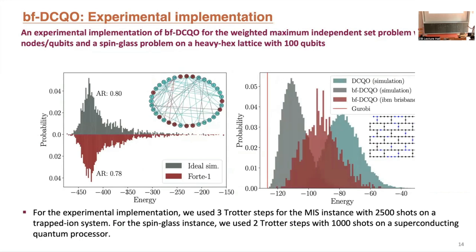To wrap up: we implemented this on a 36-qubit IonQ hardware for the Maximum Weighted Independent Set problem. The experimental results agree very well with the ideal results. We also considered a spin glass instance on an IBM heavy-hexagonal lattice matching the hardware connectivity, which allowed us to go up to 100 qubits. This is a 100-qubit experimental result compared to the ideal simulation of bias field DCQO.